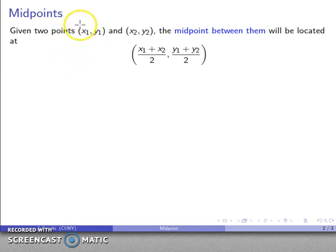So if I have two points, again I have the coordinates of the two points, x1, y1, x2, y2, then the midpoint between them is going to be located at x1 plus x2 over 2, y1 plus y2 over 2.